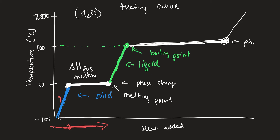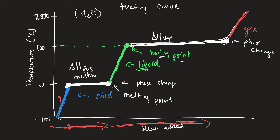A plateau represents a phase change, so we know we're changing between a liquid state to a gas state. This phase change is called boiling, and this is your enthalpy of vaporization — the amount of energy needed to get a substance from its liquid state to its gas state. The temperature will not change until all the water goes from its liquid state to its gaseous state, and then it will continue to increase.